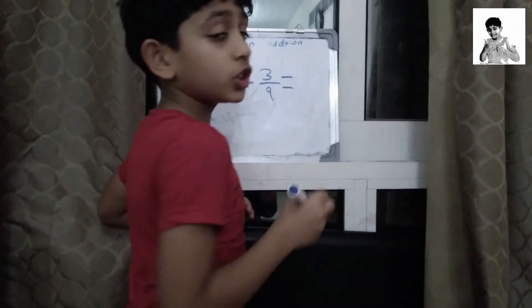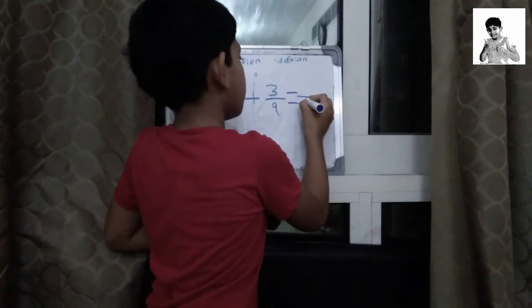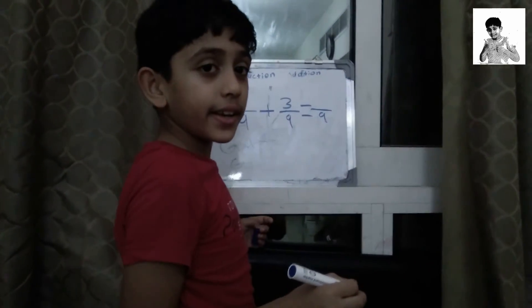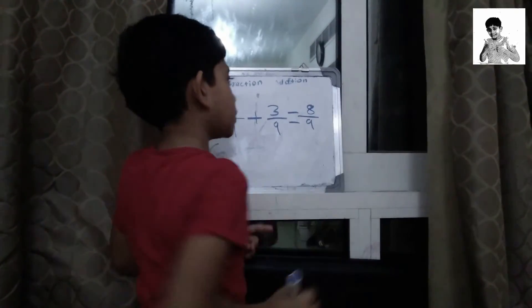As usual, we keep the nine here. Five plus three is eight, and we keep the eight here. So the answer is 8/9.